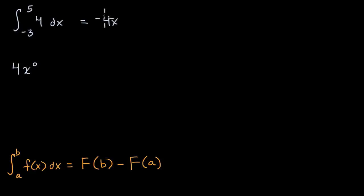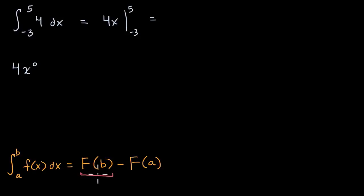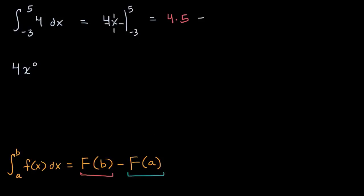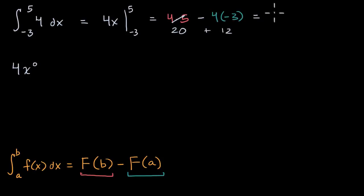This is our capital F of x, and we're going to evaluate that at five and at negative three and find the difference. Evaluating the antiderivative at our upper bound, that is going to be four times five. And then from that, we're going to subtract evaluating our antiderivative at the lower bound — four times negative three. So this is 20, and then minus negative 12, which is plus 12, giving us 32.